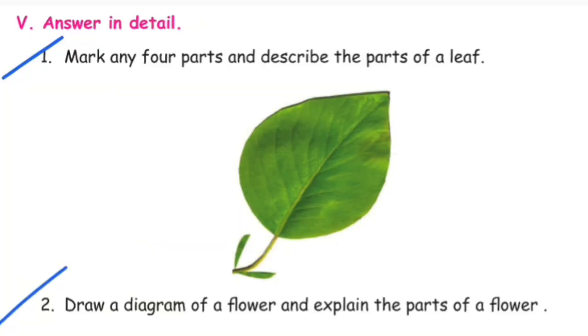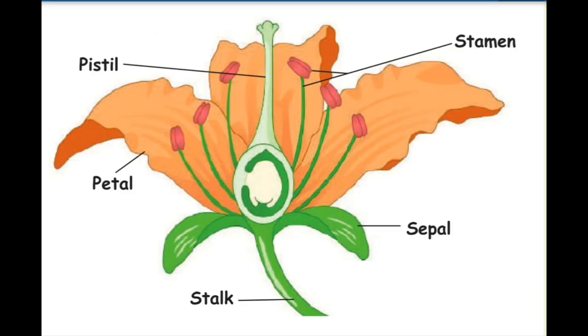Second one: draw a diagram of a flower and explain the parts of a flower. This is the flower with its parts marked: stamen, sepal, stalk, petal, and pistil.